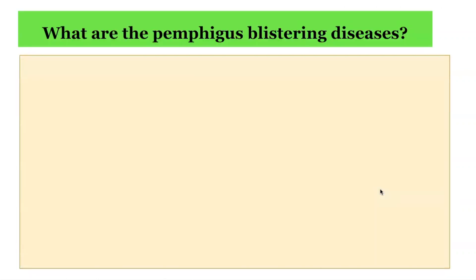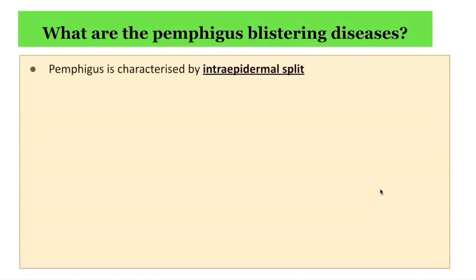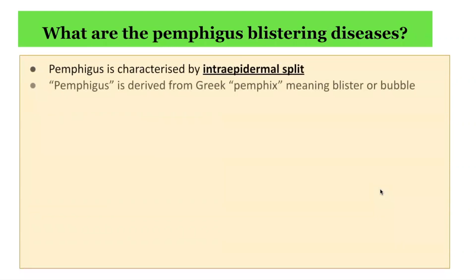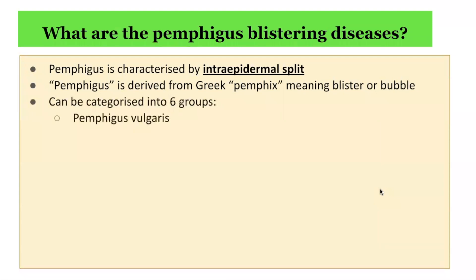Just as a reminder, what are the pemphigus blistering diseases? Pemphigus is characterised by an intraepidermal split in the skin. Pemphigus is derived from the Greek word pemphix, which means blister or bubble. It can be categorised into six groups. This includes Pemphigus vulgaris, of which there are variants including the reactive form, Pemphigus vegetans.